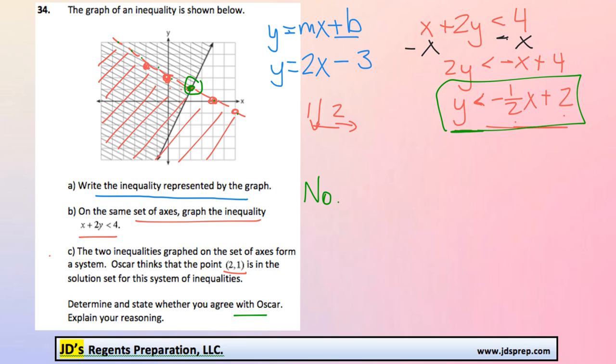So we'd say no, Oscar is wrong. And we could prove it by taking the x and y values of 2 and 1, and then plugging them into here, and we'll watch what happens.